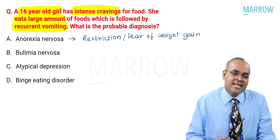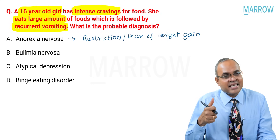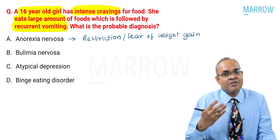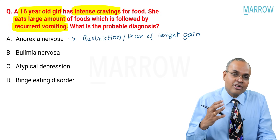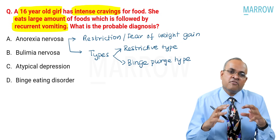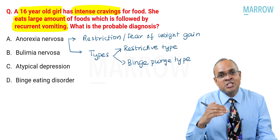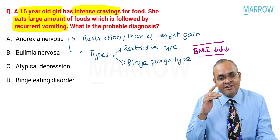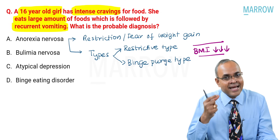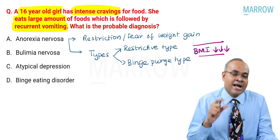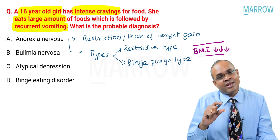When talking about anorexia, patients typically have restriction of food intake rather than intense craving, and most importantly they have a fear of weight gain and a distorted body image. There are two types of anorexia nervosa: restrictive type and binge-purge type. To differentiate from bulimia nervosa, you need to look at BMI — it should be less than 17.5 as per DSM or 18.5 as per ICD. If BMI is low and mentioned, only then do you think of anorexia nervosa.